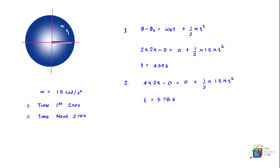If this is the time to do four revolutions and 4.09 seconds was the time for two revolutions, then the time taken for two revolutions after the first two is t₄ - t₂ = 5.78 - 4.09 = 1.70 seconds.